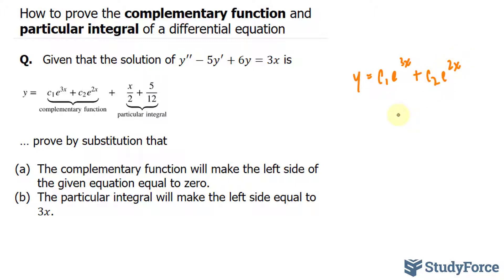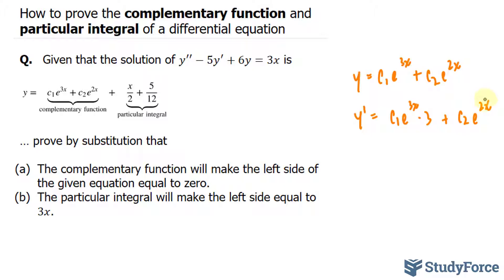I'll take the derivative of this. y prime gives us c1·e^(3x) — taking the derivative of 3x we get 3 — plus c2·e^(2x) — taking the derivative of 2x we get 2. So y prime equals 3c1·e^(3x) plus 2c2·e^(2x).